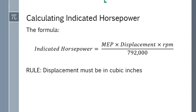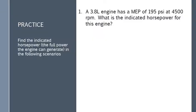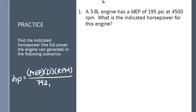Once again, our displacement will be in cubic inches. MEP will be in psi. RPM will be the engine speed in RPM. And then we just divide it by this derived number, 792,000. Let's find some indicated horsepower. I'll just quickly write the formula on the side. Our indicated horsepower, the MEP, mean effective pressure times displacement times the RPMs, and that's divided by 792,000.